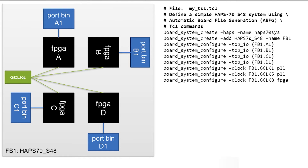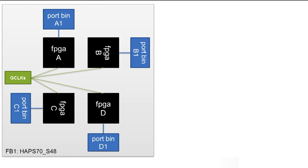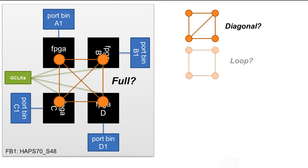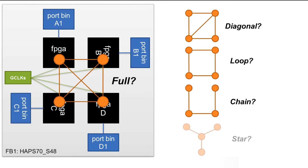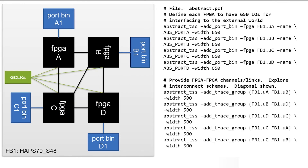Here's an example of a partition constraint that defines design ports available to each FPGA and a cable pattern to connect the FPGAs. These constraints reflect the conventions of the ASIC design's architecture and we can now run the automated partition engine and review the initial results.